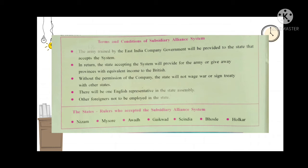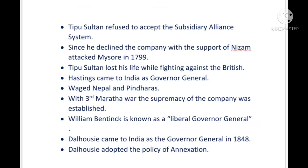The fifth condition says that other foreigners cannot be given any employment in the state. The states that accepted the Subsidiary Alliance System were: Nizam, Mysore, Avadh, Gaikwad, Sindhia, Bhosle, and Holkar. The Subsidiary Alliance System worked like sweet poison — through its implementation, Wellesley got control over many provinces and expanded the East India Company all over the country.